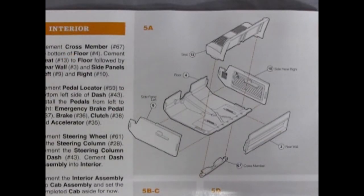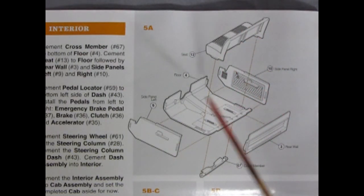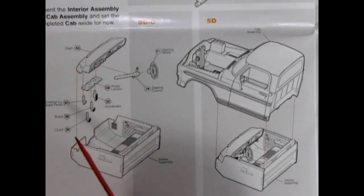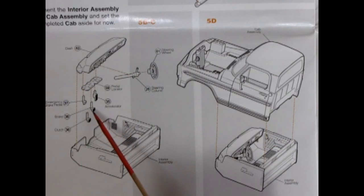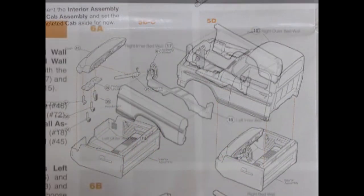The interior is a nice multi piece affair with a bench seat, two side panels, a nice floor, the rear wall and a cross member. Finishing off our interior assembly is the dashboard, the pedal cluster which includes the accelerator, the brake, the clutch and the emergency brake pedal, all gluing up onto this pedal locator, all gluing up under the dash. We also have our steering column and our steering wheel. The cab then drops onto the interior assembly.